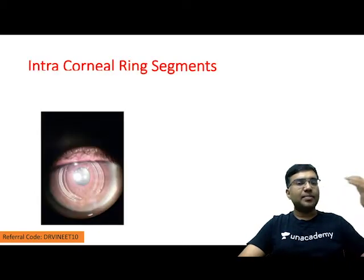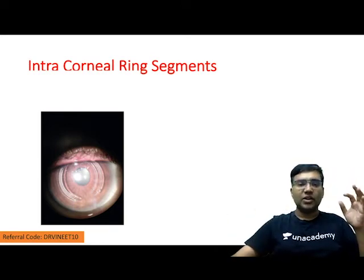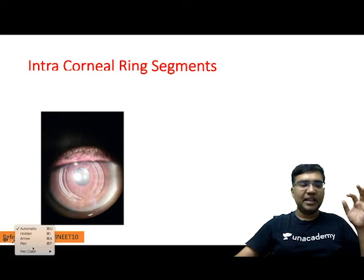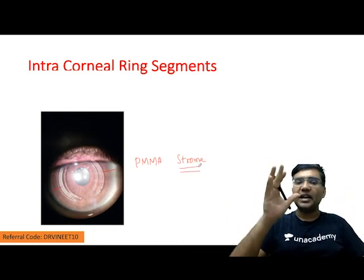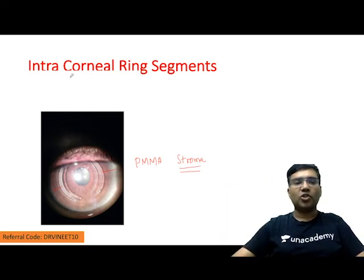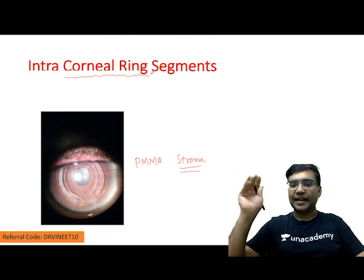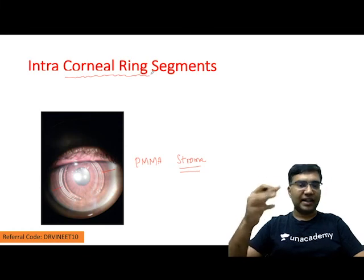Another procedure to stop progression of keratoconus is putting PMMA rings into the stroma of the cornea. We make a corneal tunnel and put a ring there. These are called Intacs, or intracorneal ring segments. These are various modalities of treatment in keratoconus.